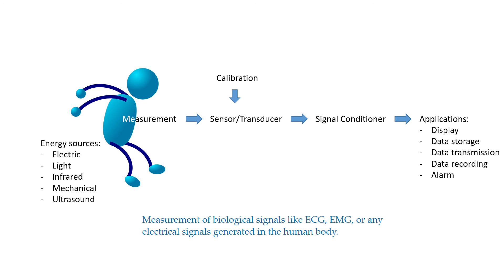A brief summary of what is biomedical instrumentation: it is a measurement of biological signals, such as ECG — the electrocardiogram signals — EMG, which are related to electromyological signals such as muscle movements, EEG — the electrical signals coming from the brain — or any electrical signals generated in the human body. That's all for now. Thank you for watching!